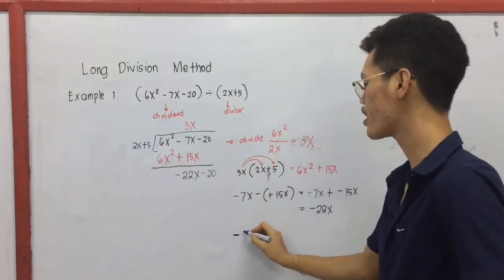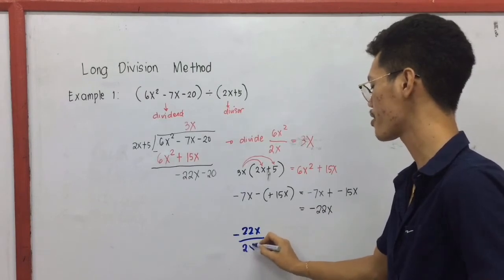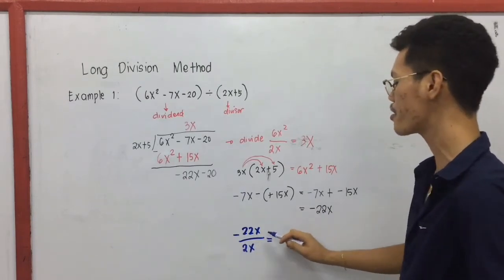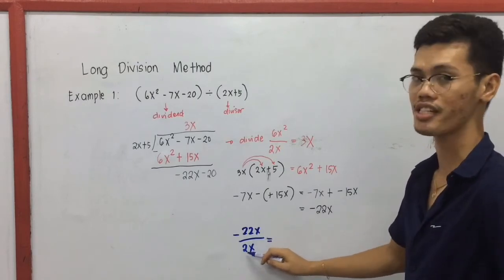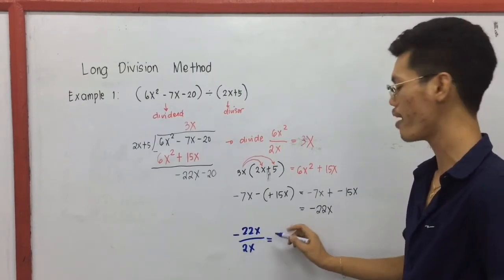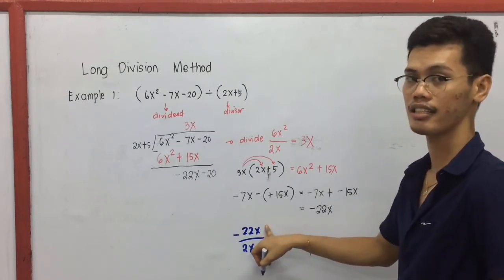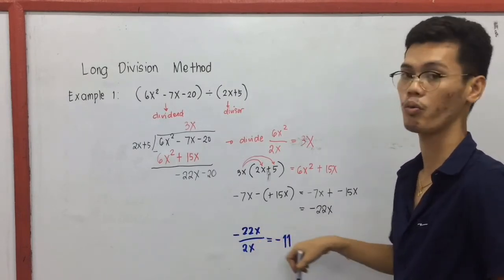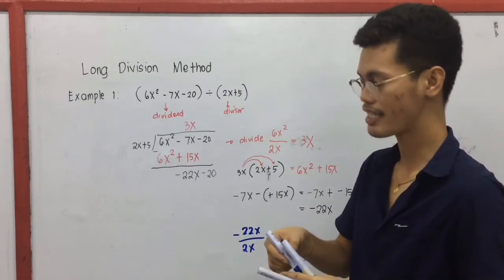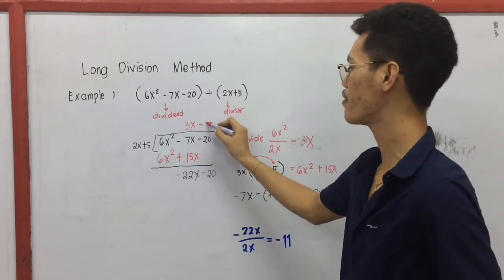So negative 22x divided by 2x. By the quotient rule for exponents, we divide the coefficients: negative 22 divided by 2 makes negative 11. And x divided by x makes 1. Therefore, the quotient is negative 11.